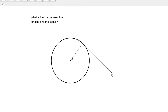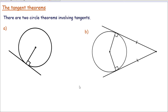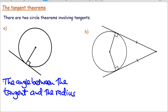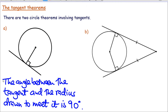This angle here is always 90 degrees. No matter where you move this, they are always perpendicular. You can go ahead and say that the angle between the tangent and the radius drawn to meet it is 90 degrees. That's very important — the angle between the tangent and the radius drawn to meet it is 90 degrees.